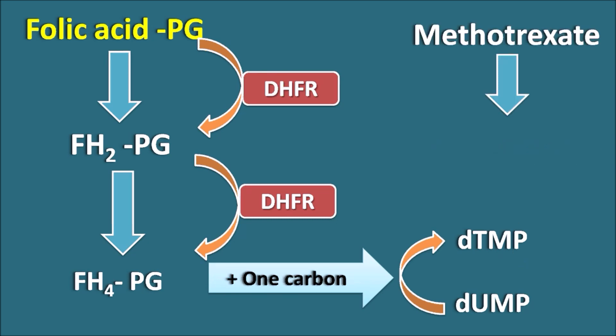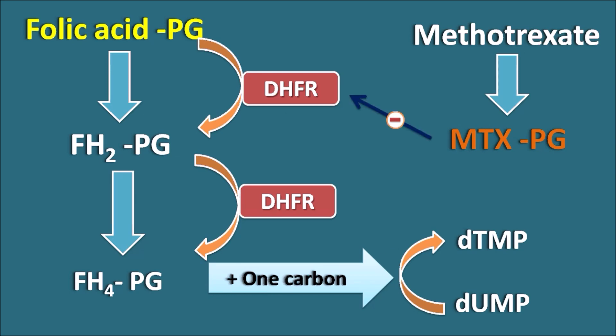Methotrexate is converted into its active methotrexate polyglutamate form, which inhibits dihydrofolate reductase enzyme at two steps, thereby inhibiting the conversion of folic acid into tetrahydrofolic acid. In this way, methotrexate acts as an antimetabolite.